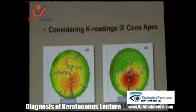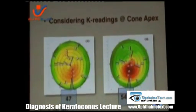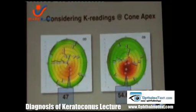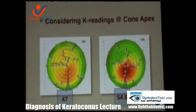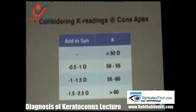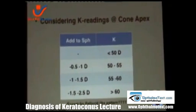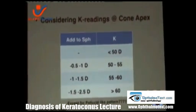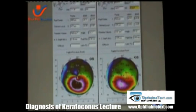When we have two corneas with the same refractive error and the same pattern, if you go to the nomogram of the companies, you will find they suggest the same segment — maybe 160 or 200 microns for both. But this is not logical, because the K readings are different. What I do is add something to the sphere according to the K reading, because we are pushing the cone towards the center — except in the pellucid-like pattern, where after the rings and after the improvement, the cone remains peripheral.